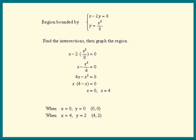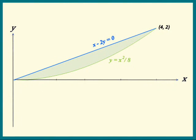Now we're ready to draw the region. Here's what it looks like. Straight line, parabola, intersection points, origin, and 4 comma 2.